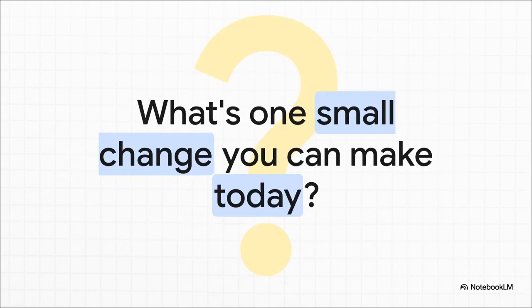I'm going to leave you with this question to think about: what is one small change you can make today? Maybe it's adding alt text to an image you're about to post. Maybe it's double-checking the color contrast on a button you're designing. Or maybe it's just using clear headings in a document. The journey to a more accessible web starts with one small, intentional step. What's yours going to be?